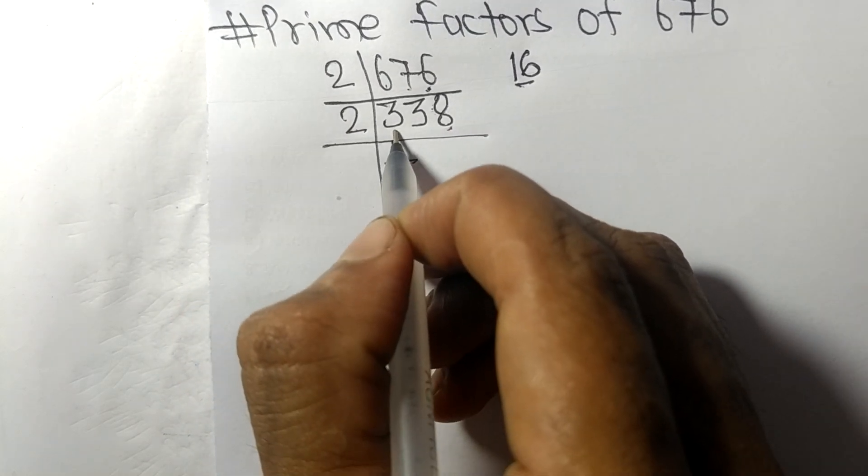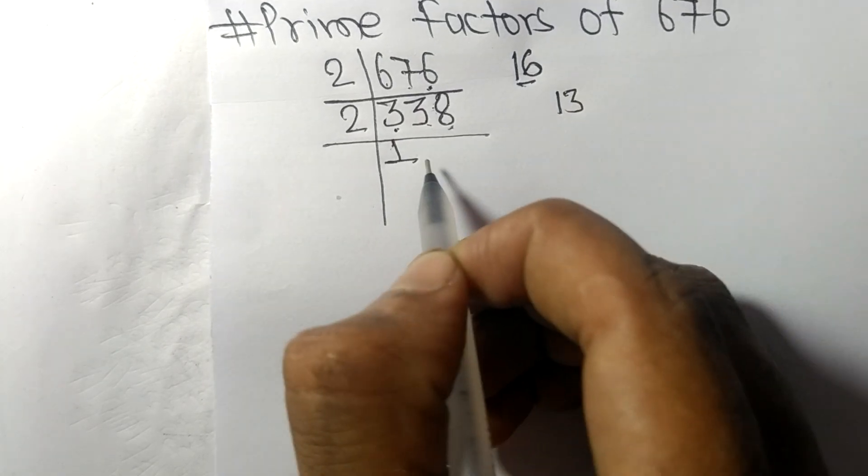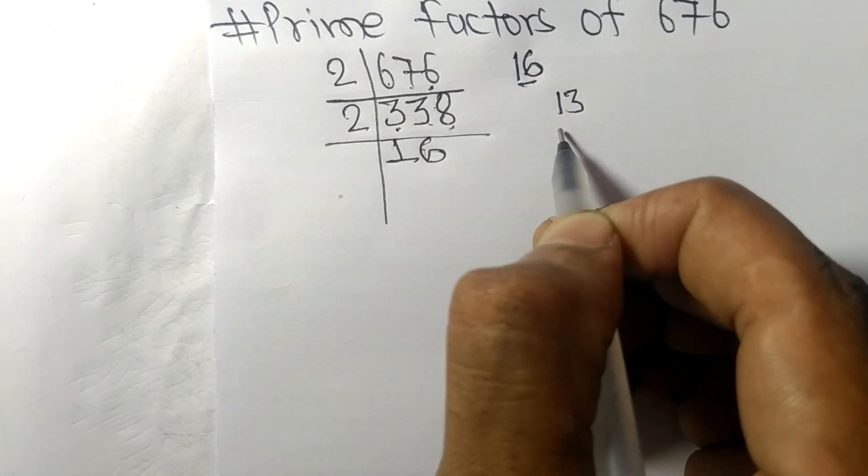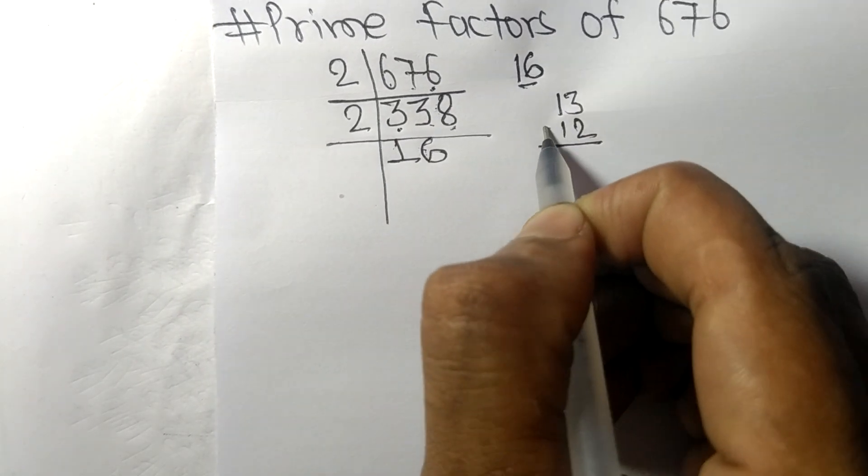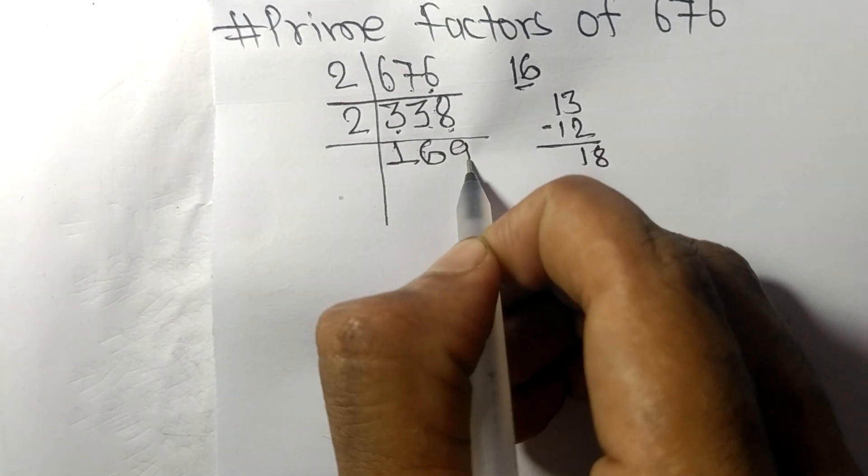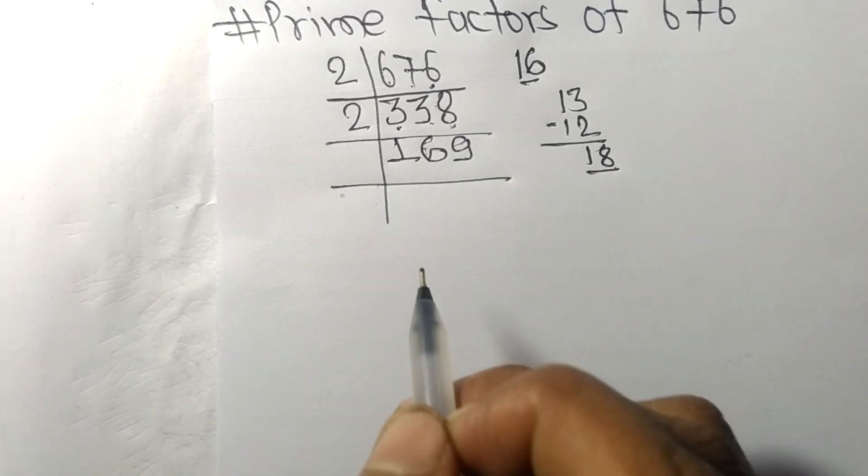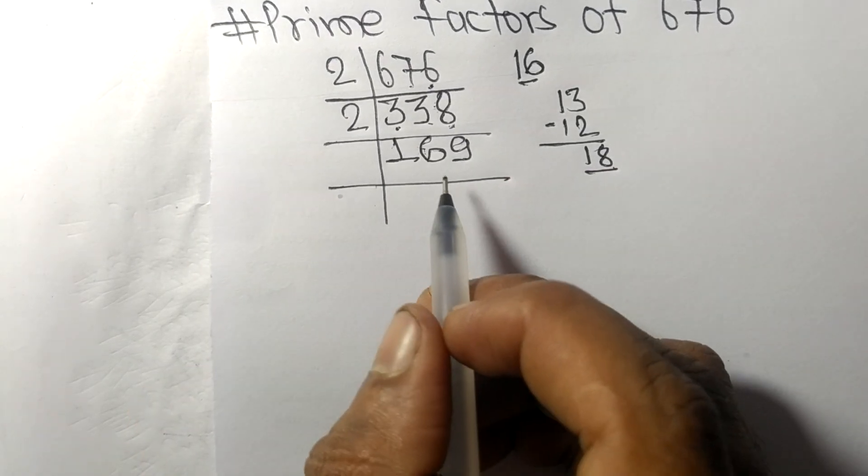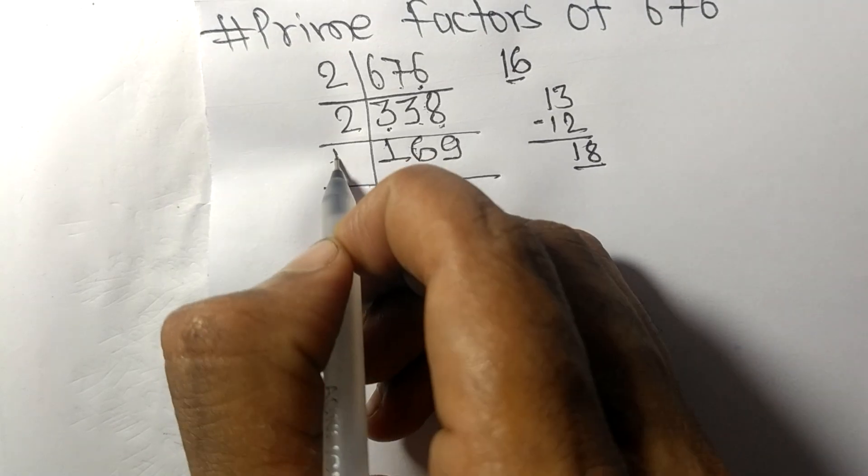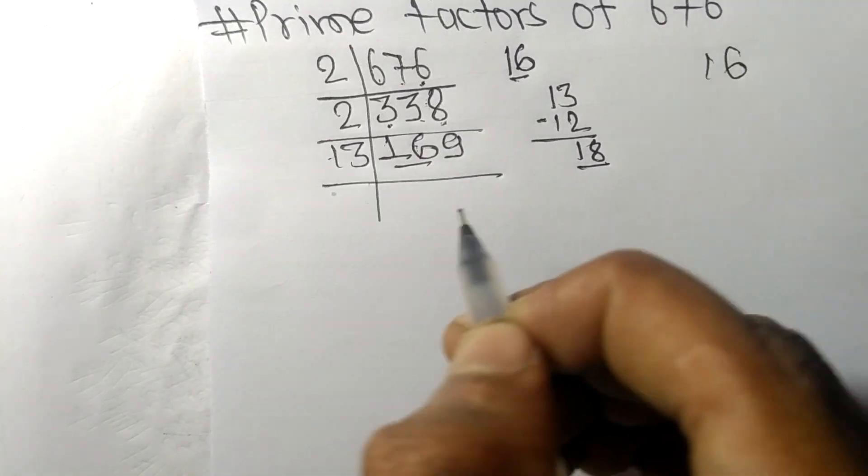2 times 1 equals 2, remainder 1. Then 13, 2 times 6 equals 12, remainder 1. Then 18, 2 times 9 equals 18. So now we got 169 which is divisible by 13.